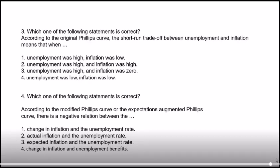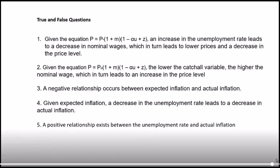Review statements: Statement 1 — given the equation P = P^e(1+M)(1-U+Z), an increase in the unemployment rate leads to a decrease in nominal wages, which in turn leads to lower prices and a decrease in the price level — TRUE. Statement 2 — given the equation, a lower catch-all variable Z means lower nominal wages and a lower price level. The higher the Z, the higher nominal wages and the higher the price level — TRUE.